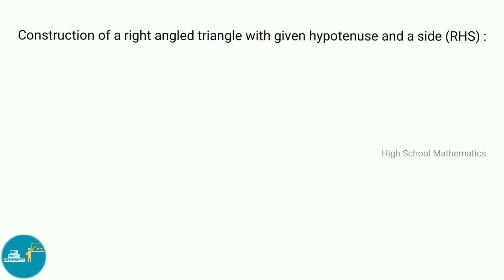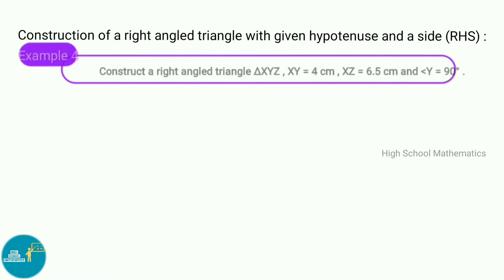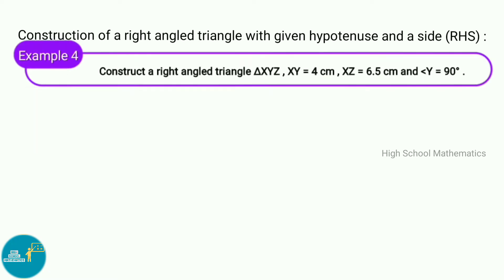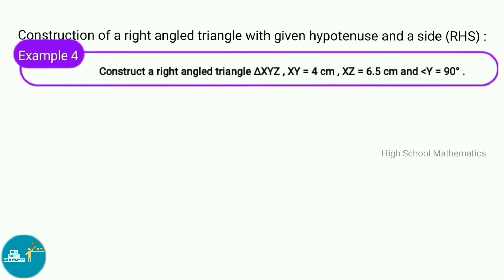Construction of a right angle triangle with given hypotenuse and a side. Example 4: Construct a right angle triangle XYZ where XY equals 4 centimeters, XZ equals 6.5 centimeters, and angle Y equals 90 degrees.